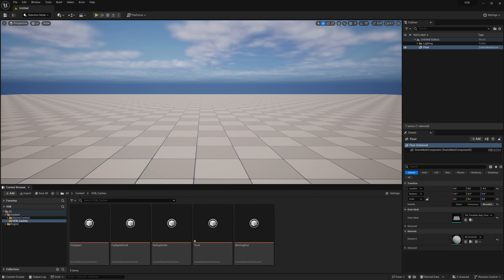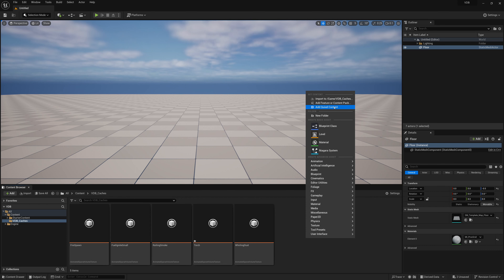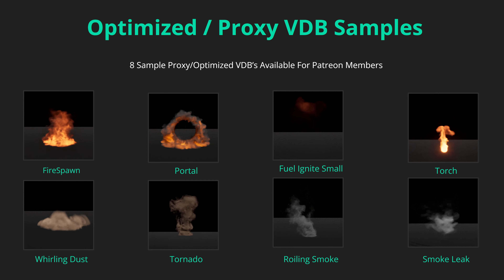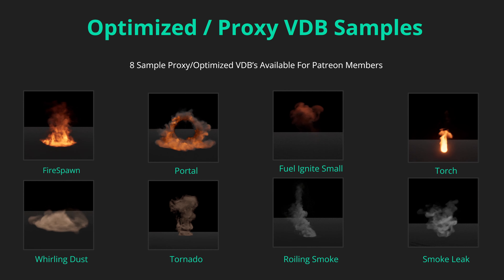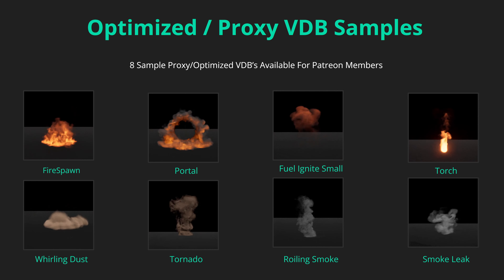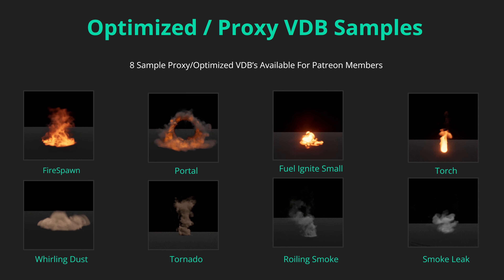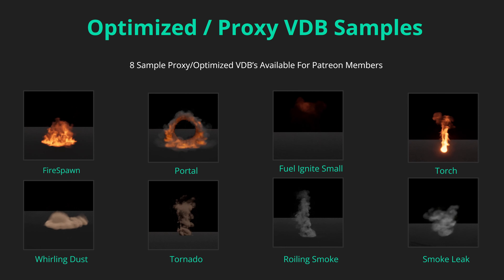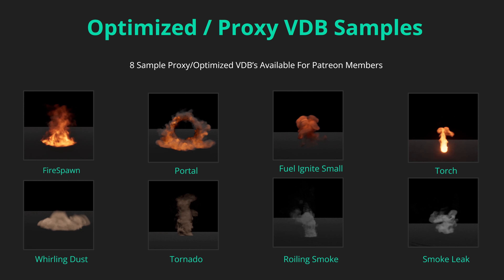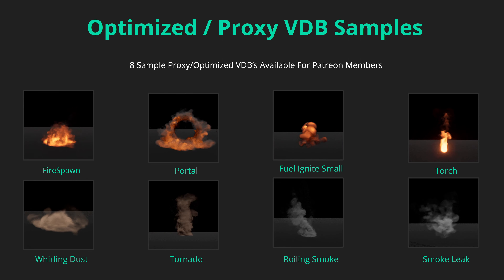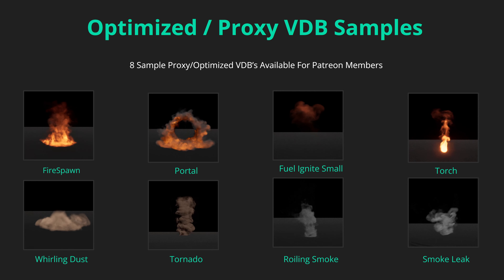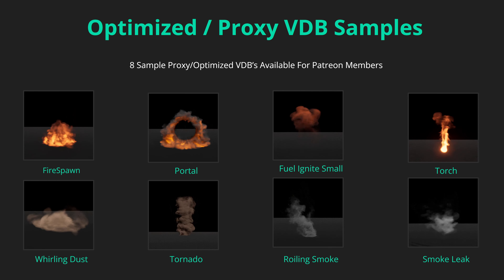We'll start with a brand new scene, go to the content browser, and right-click import. Here you can import your VDB caches. If you're part of the Patreon, which you can find in the description, you'll get access to eight volume caches to test with in Unreal. They're optimized and fairly low quality for Unreal so they play back quickly, with velocities removed and only the necessary data stored.